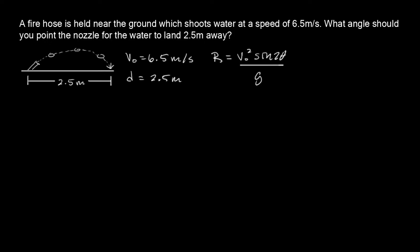This formula gives you the total distance if you know the velocity and the angle. This problem is super easy if we know this formula — all we have to do is solve for theta. Let's call R as d, and multiply both sides by the reciprocal to isolate sine 2θ. So we get: sine 2θ equals D times g over V₀ squared.